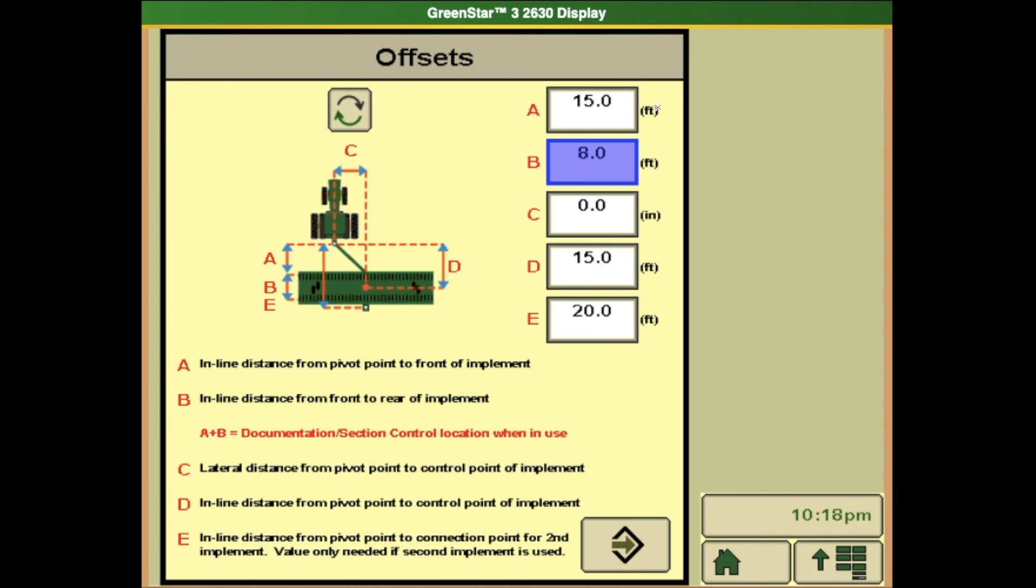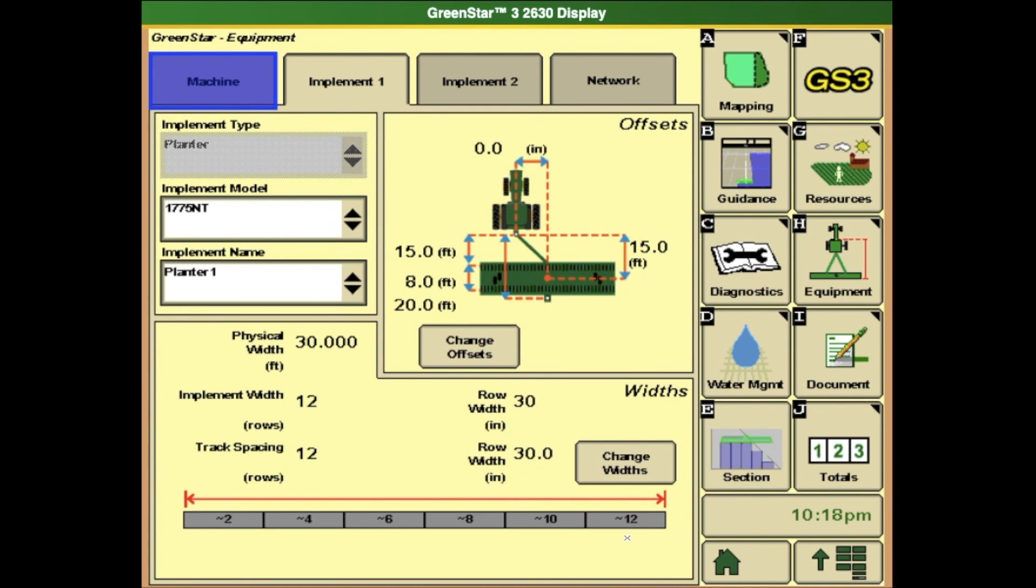Once all measurements on the offsets page are correct, hit the accept button so it saves to the display. You will see any changes you made reflected in the picture on your screen.